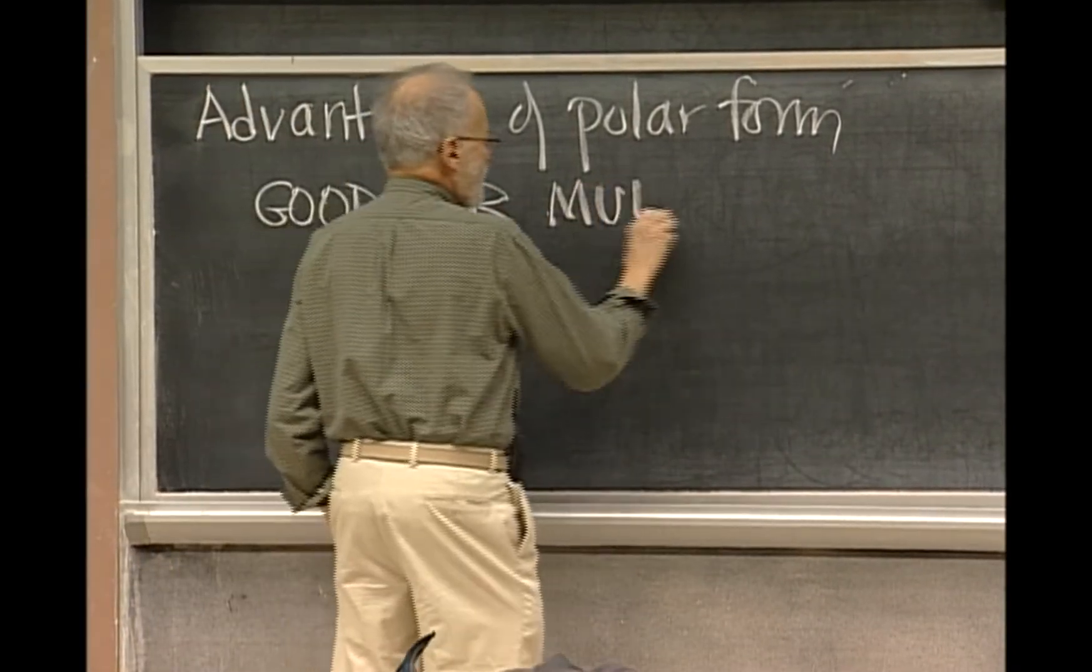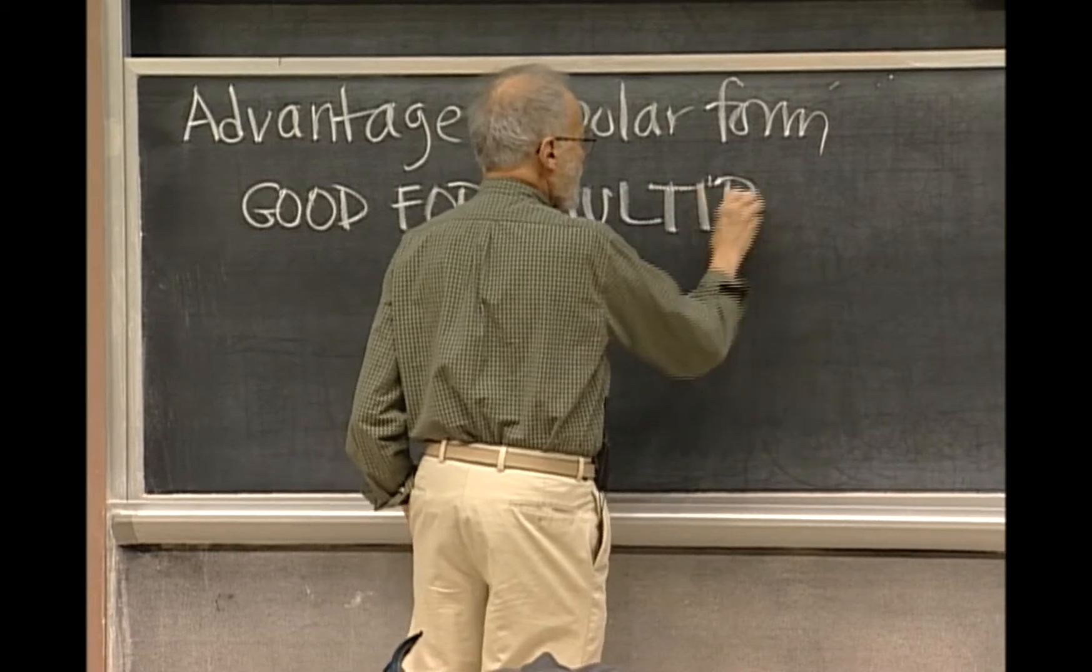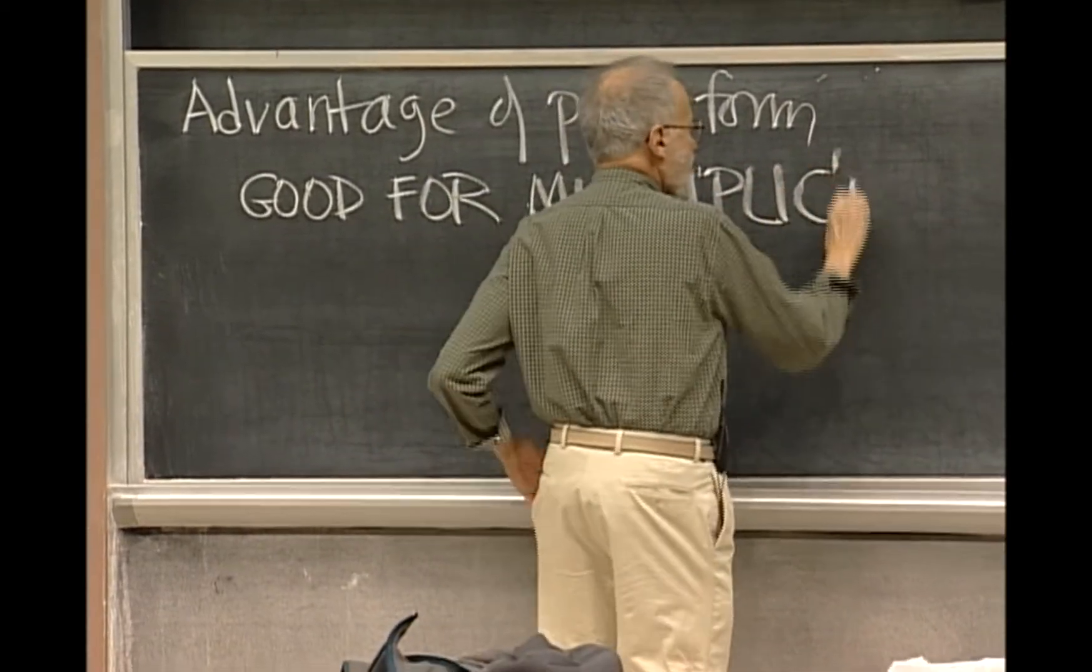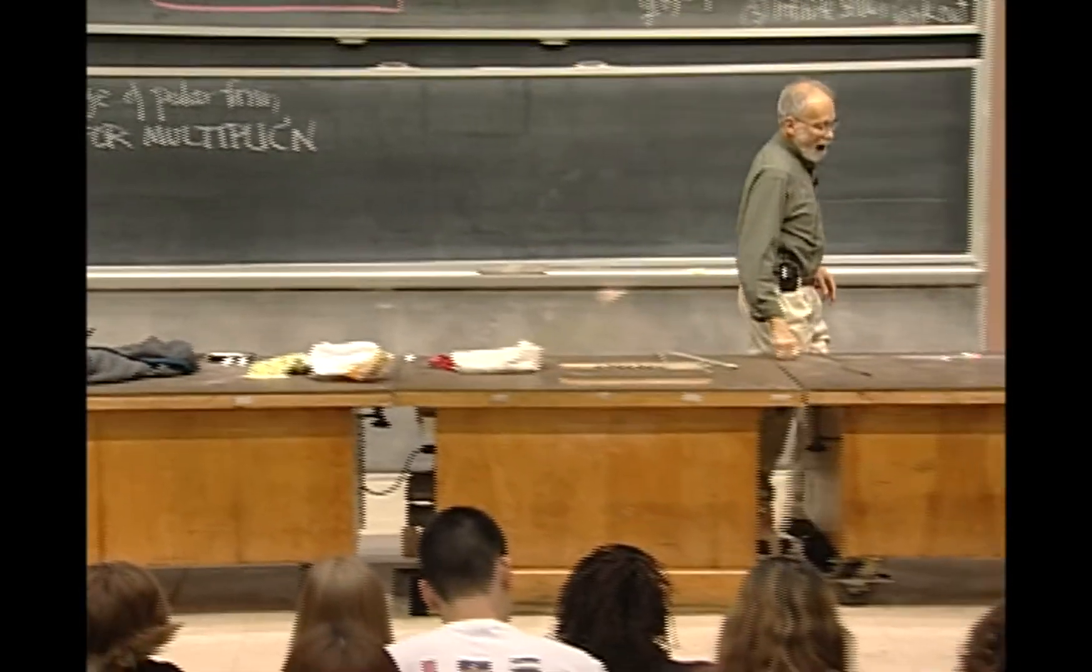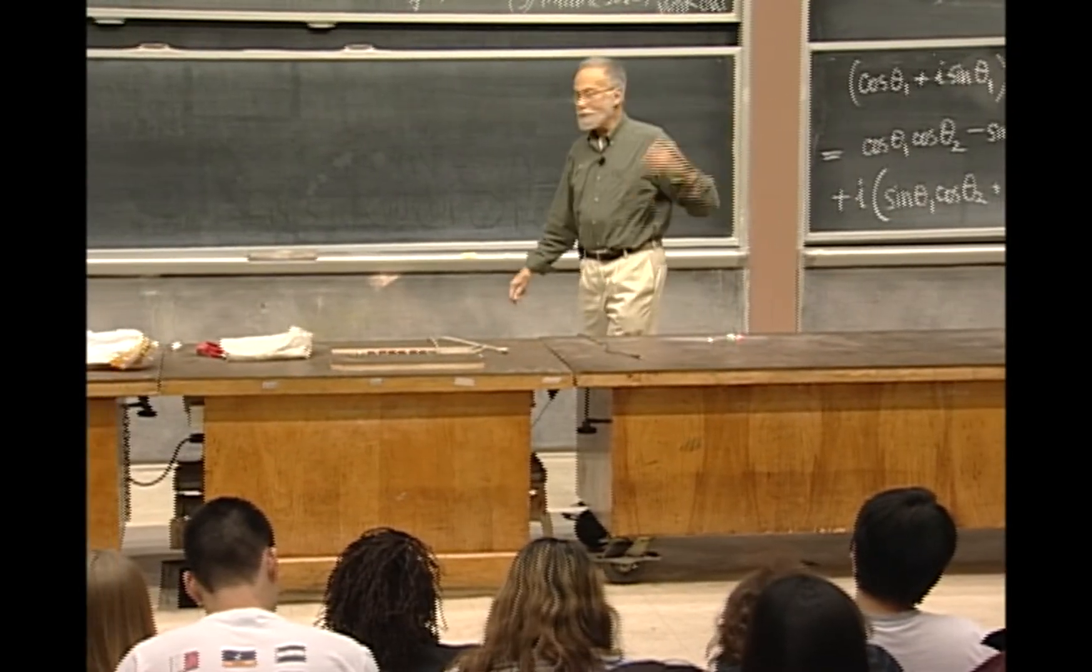Now of course, you know how to multiply complex numbers even when they're in the Cartesian form. You know, that's the first thing you learn in high school, how to multiply a plus bi times c plus di.